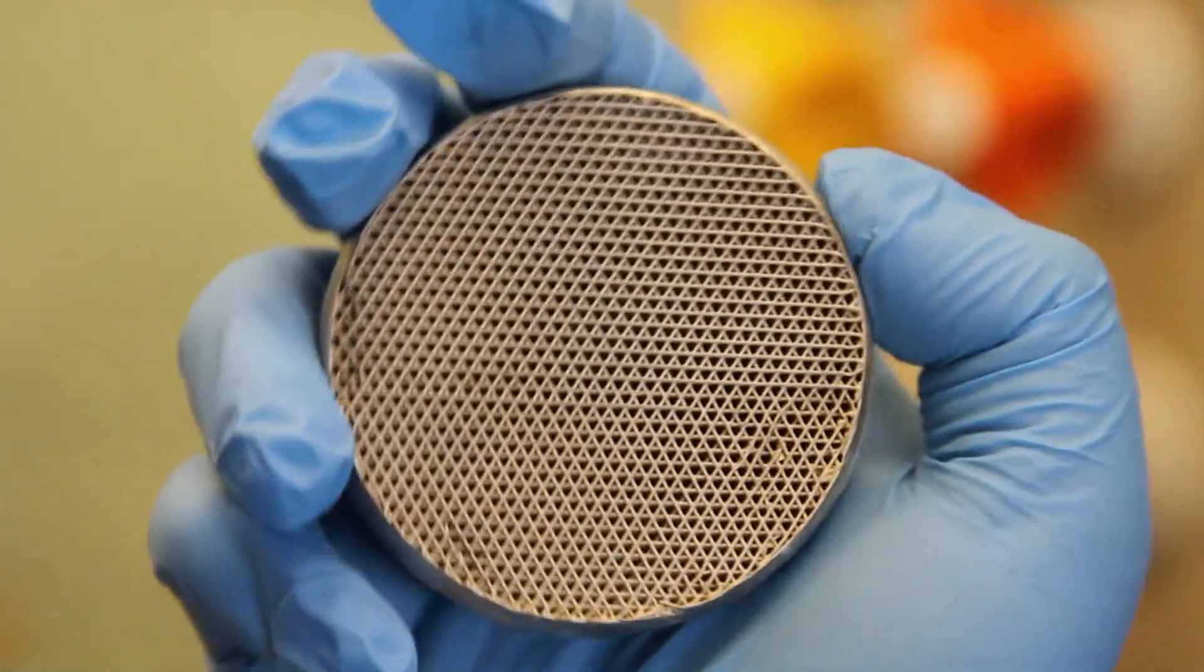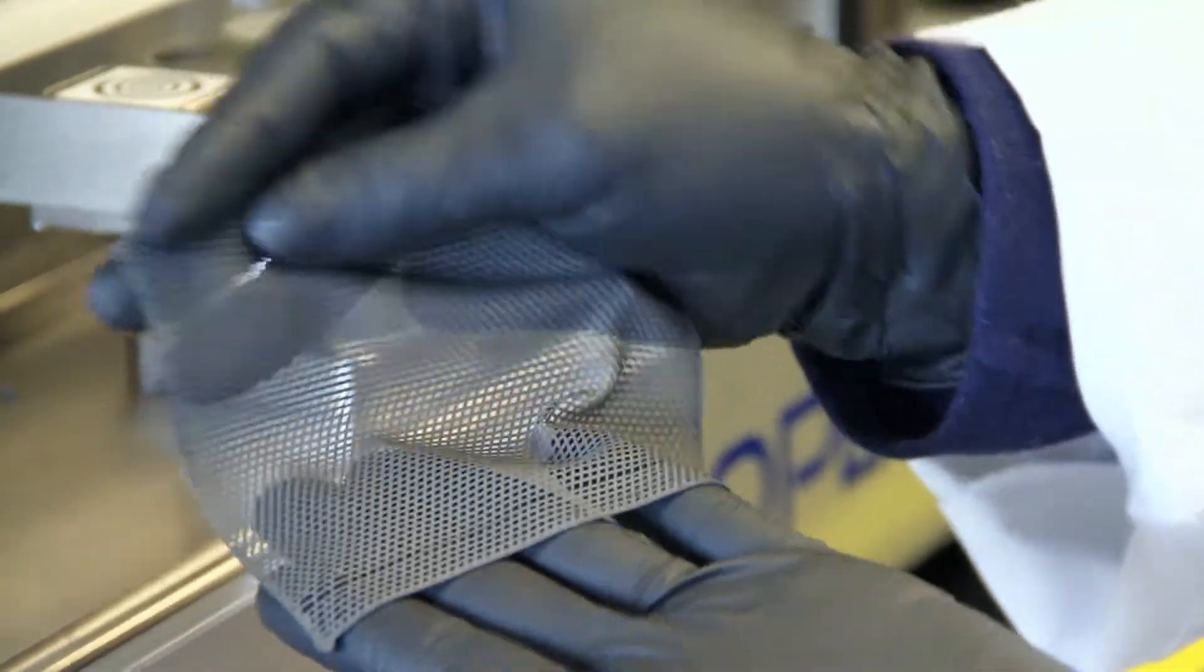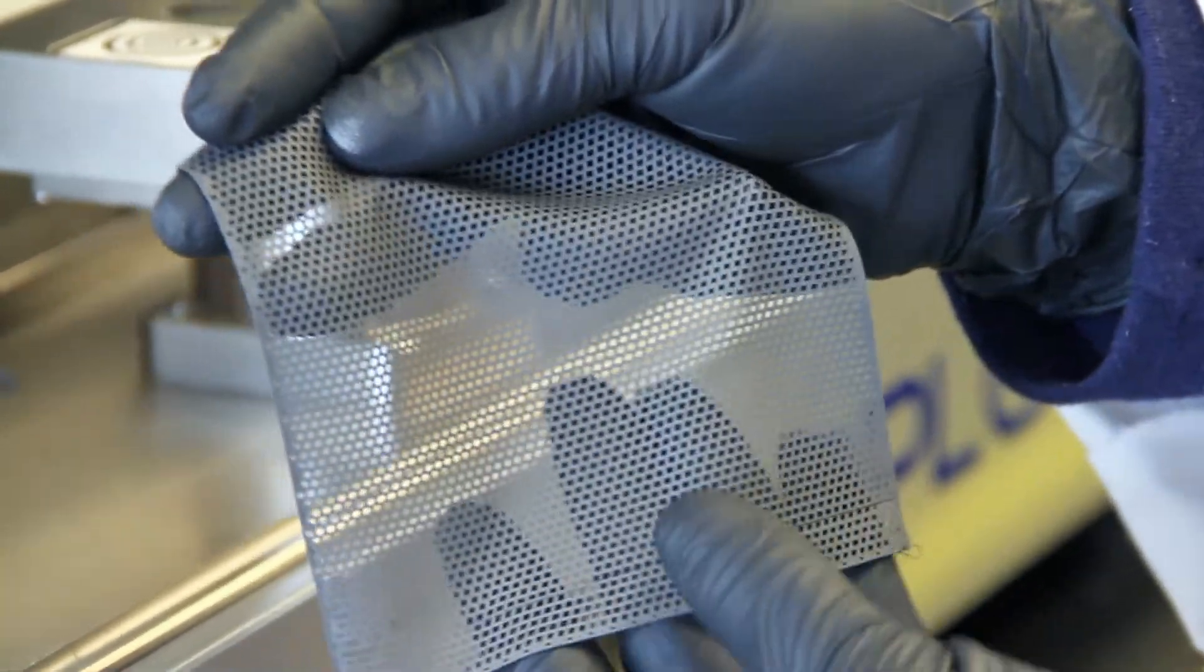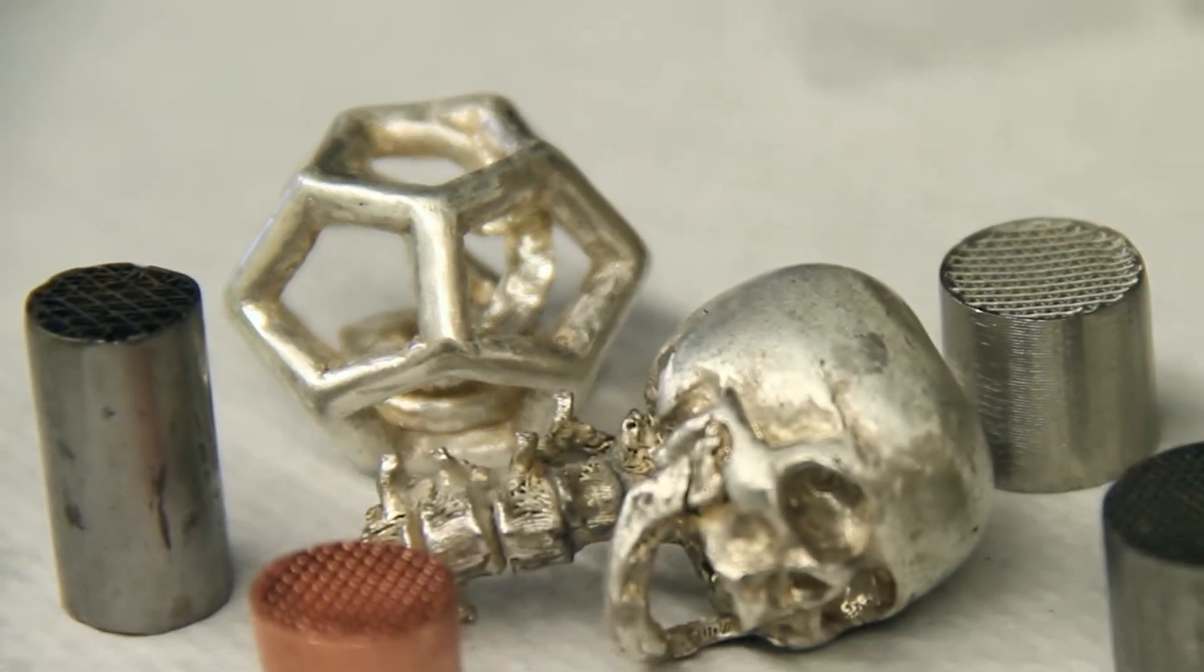The metal work is also quite interesting. Similar to the graphene work, we're making a 3D printable metal ink made of metal particles. Those metal particles can be elemental, like iron, aluminum, or nickel.